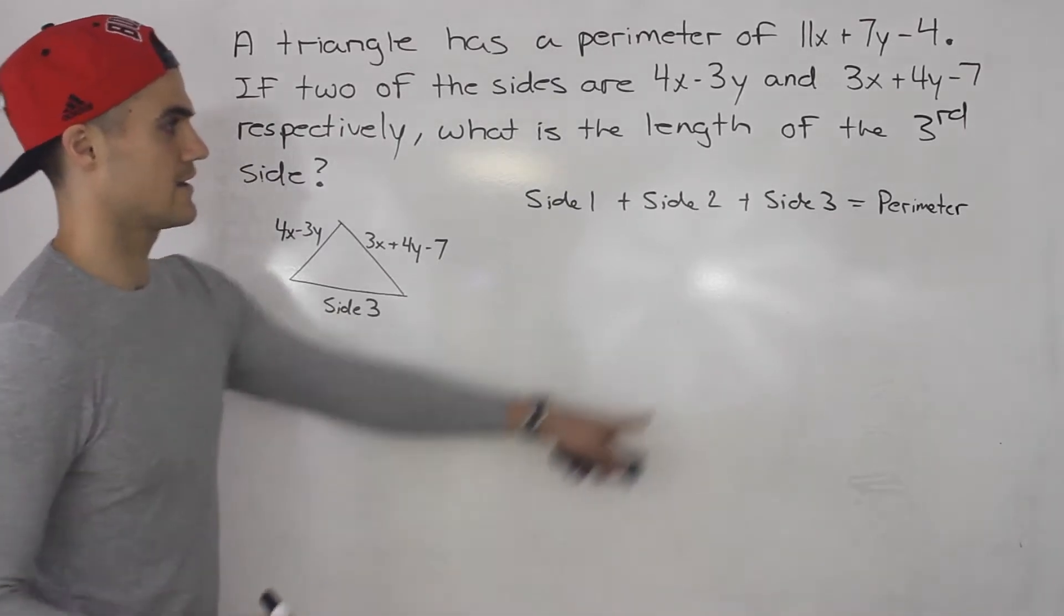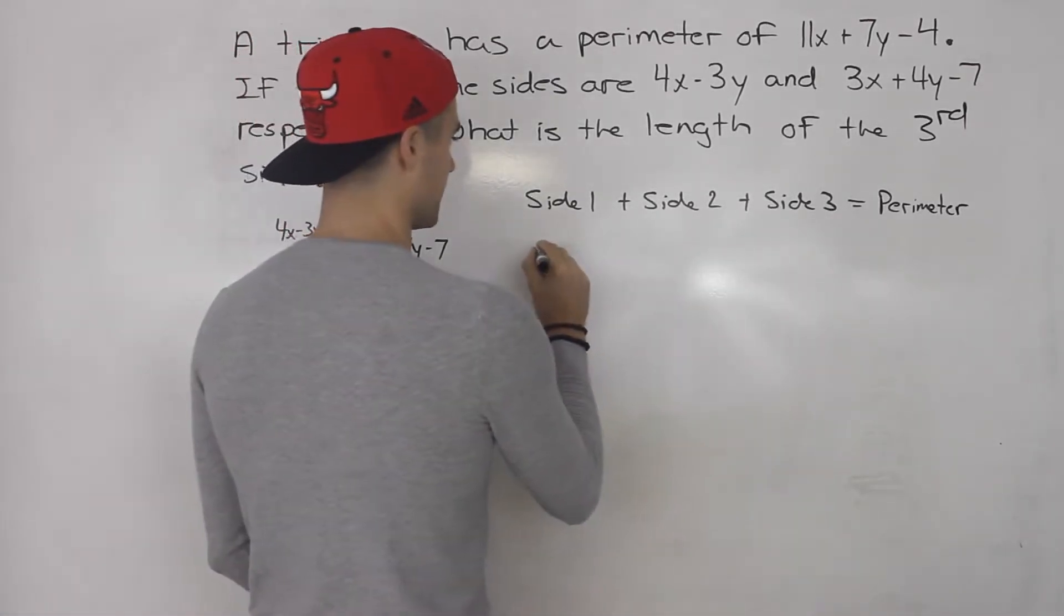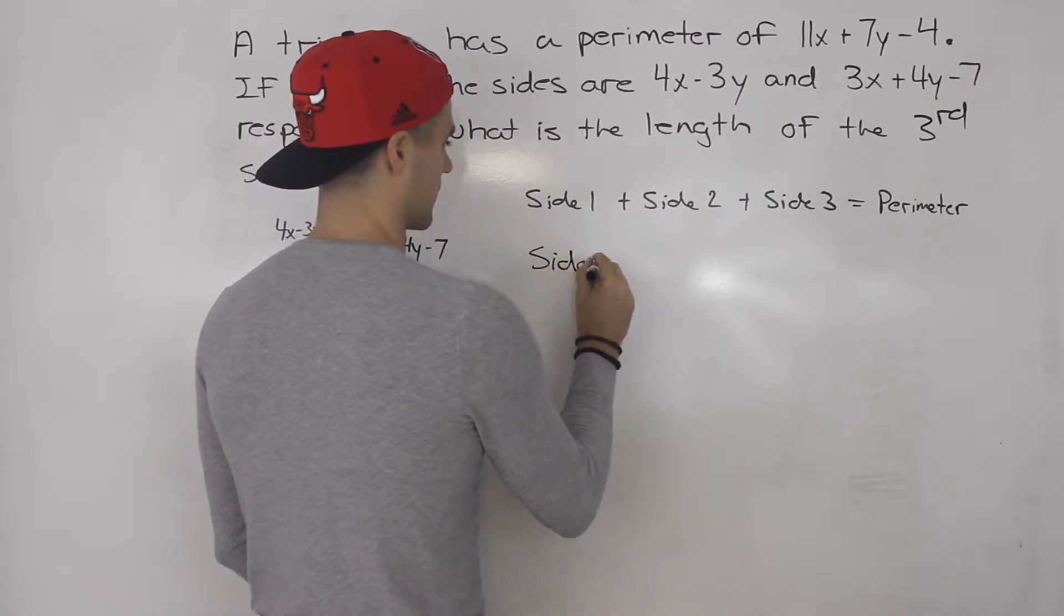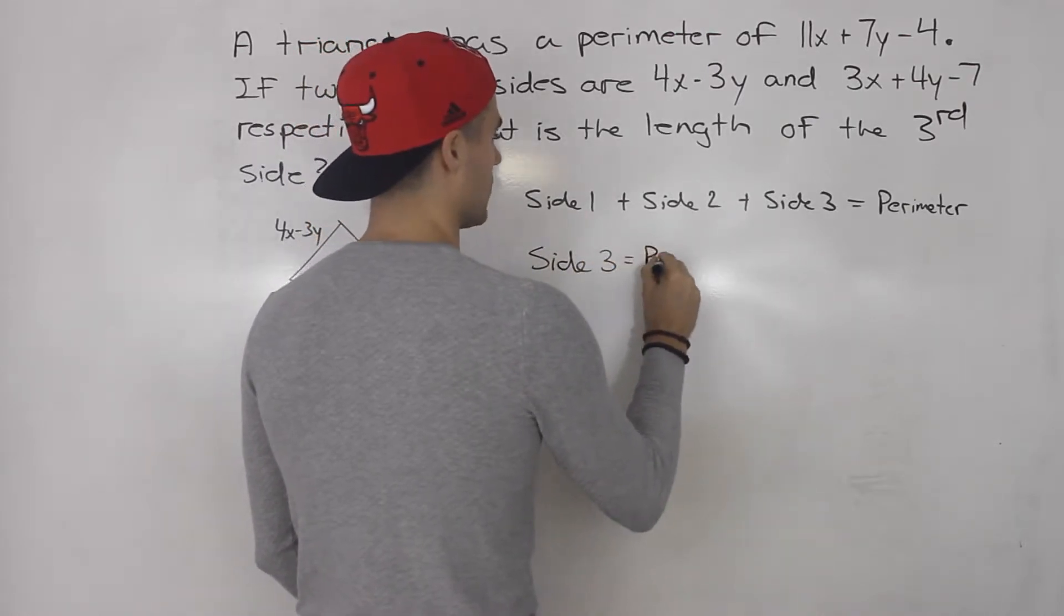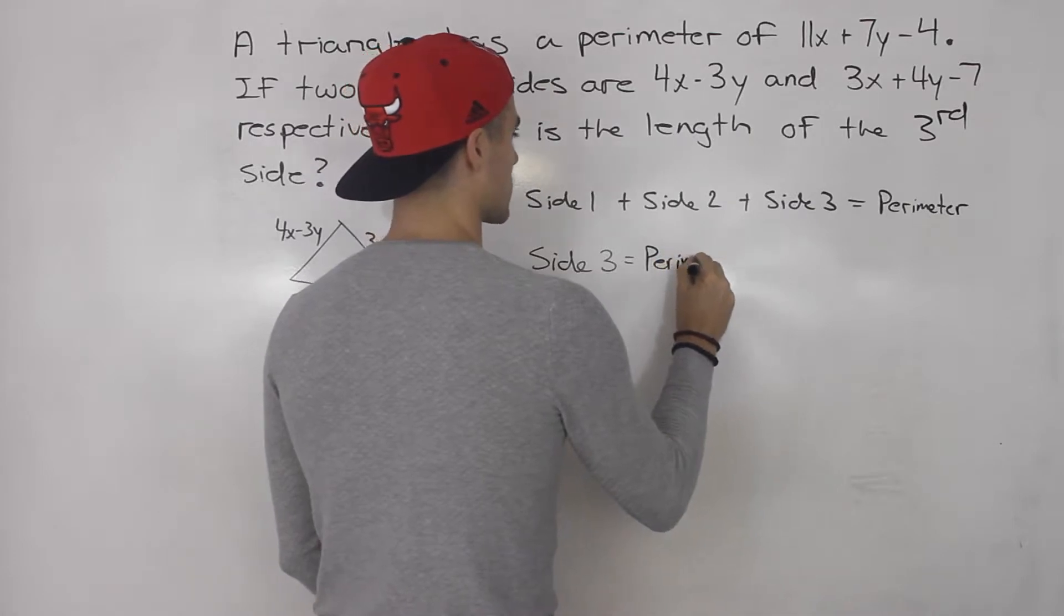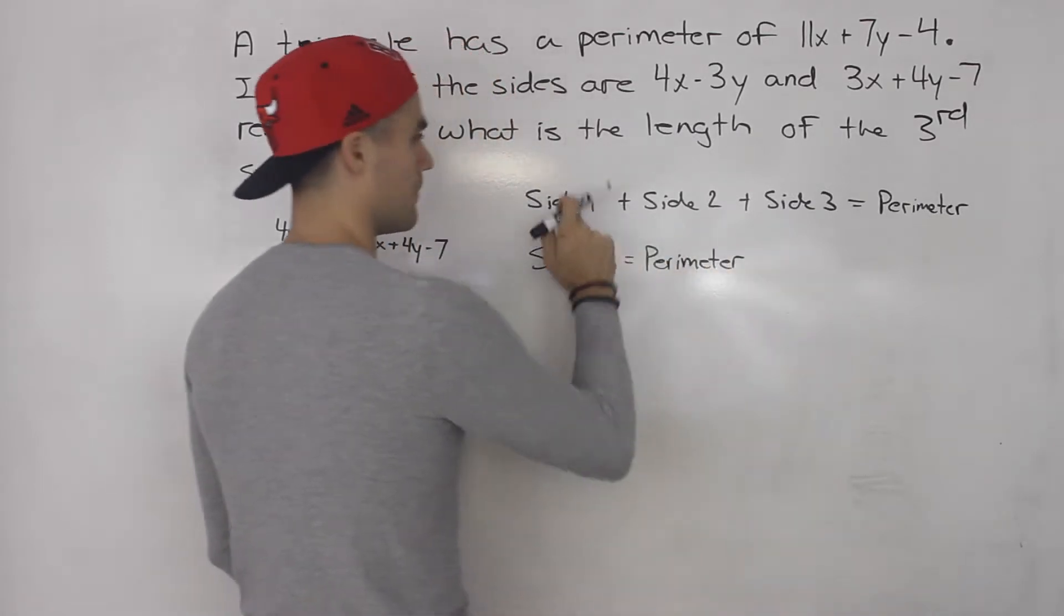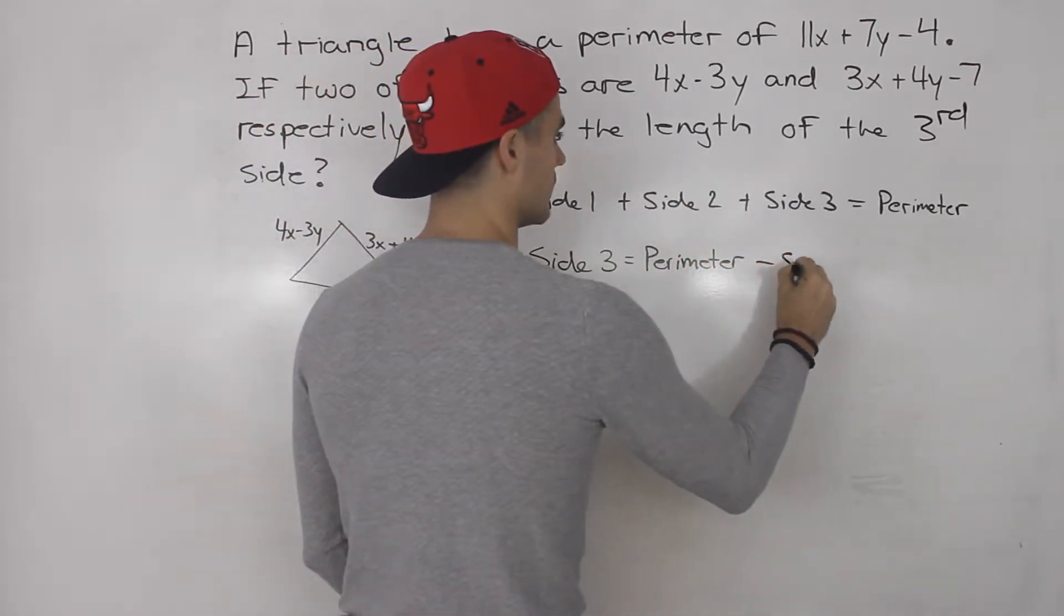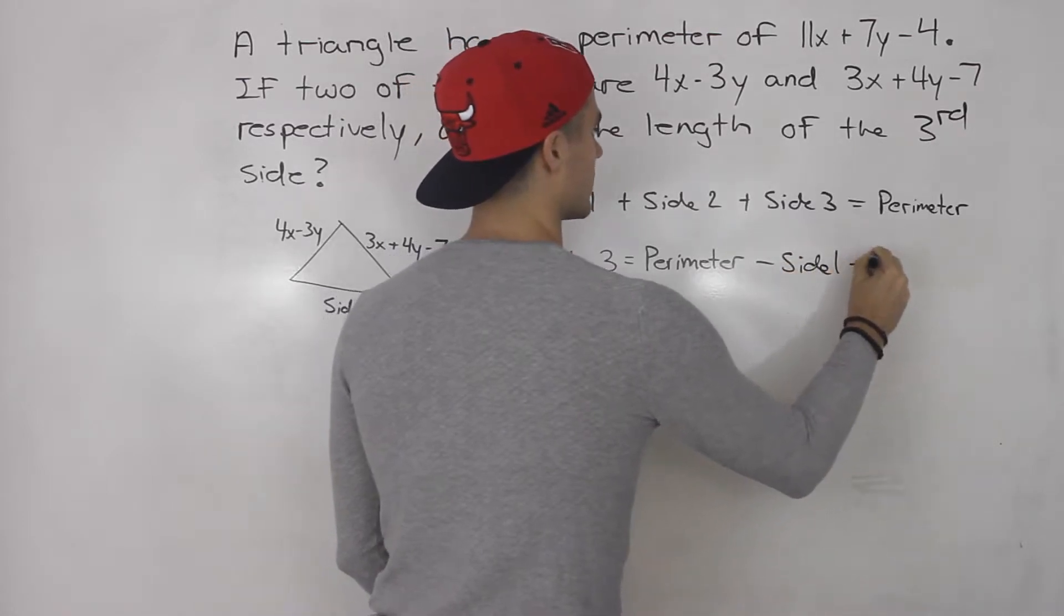Well if we want to isolate for this side 3 here, side 3 is just going to be the perimeter of the triangle minus side 1 minus side 2.